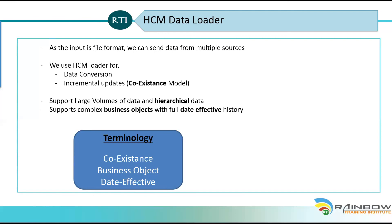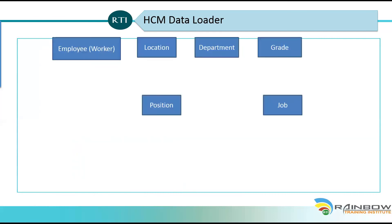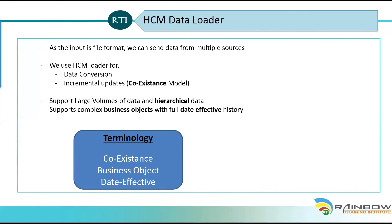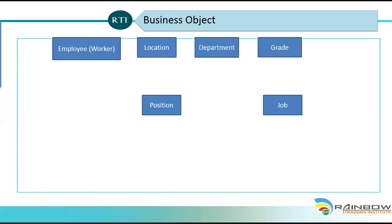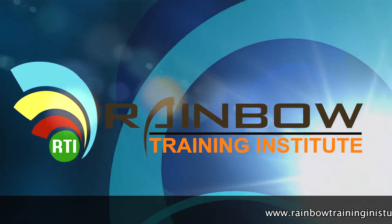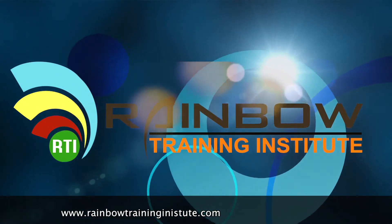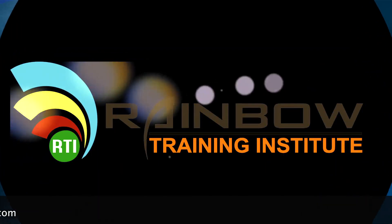Another concept is the business object. A business object is any functional component in the Fusion application — for example, Employee, Location, Department, Grade, Position, Job, Legal Entity, Business Unit, Legislative Data Group are all examples of business objects in HCM Data Loader.